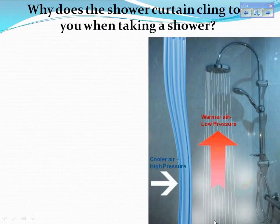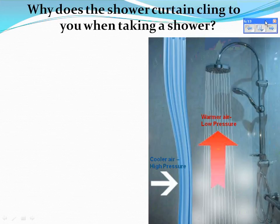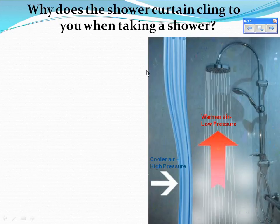Here's a thinking question: why does the shower curtain cling to you when you're taking a shower? The water in the shower is hot and causes the air in the shower to rise because it's warm, giving it low pressure. The cold air outside moves in to take the place of the warm air. Basically, you have a small convection current in the bathroom as you take a shower, causing the curtain to cling to your body.